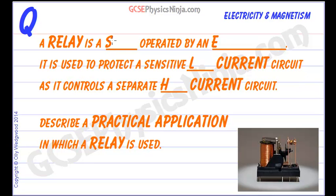A relay is a switch operated by an electromagnet. Now what's the point in that? Well, this is usually used to protect a sensitive low current circuit as it controls a separate high current circuit.